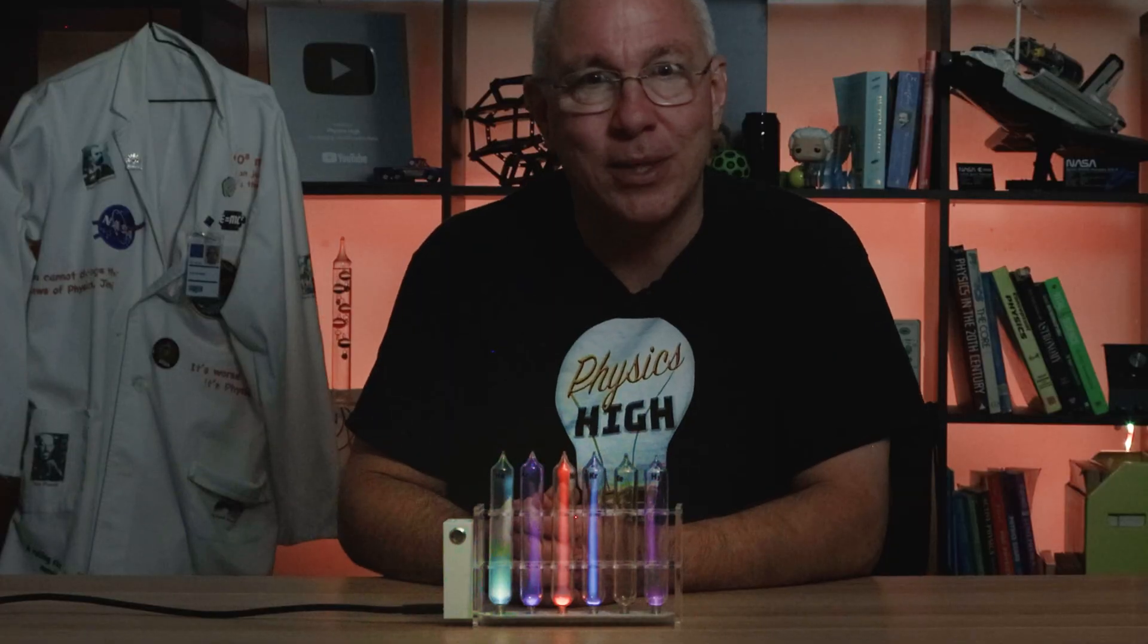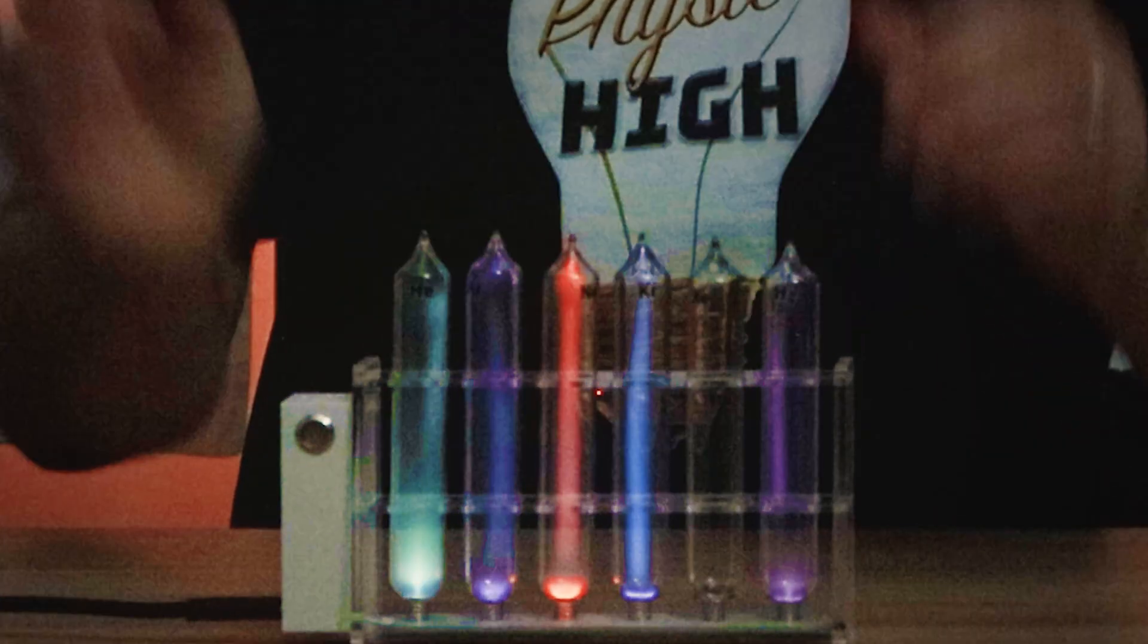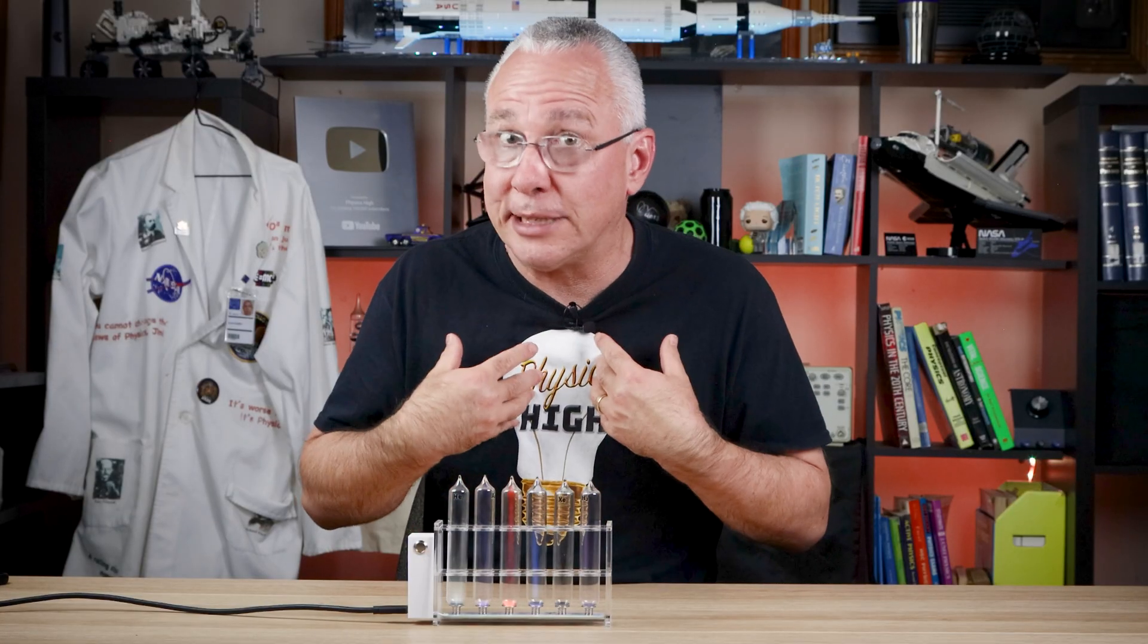Now did you notice what happened when I touched the top of the tubes? They glow brighter. That's because my body, and your body if you're playing with it, acts like a weak ground connection. It increases the electric field strength and therefore allows the current to increase through the plasma. So more ionization means more light.